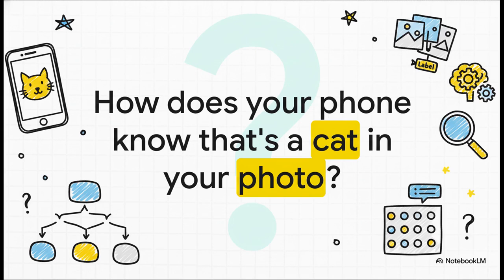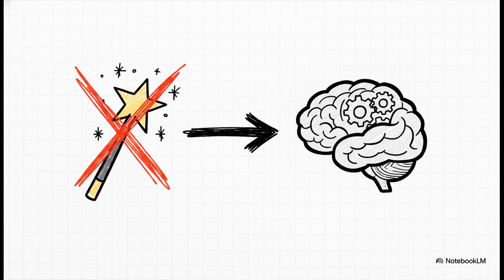Let's start with a question you've probably asked yourself. You snap a photo, and boom, your phone automatically sorts it into an album labeled Cats or Beach Trips. How on earth does it do that? Is it some kind of digital magic? Turns out, it's not magic. It's actually something way cooler: machine learning.